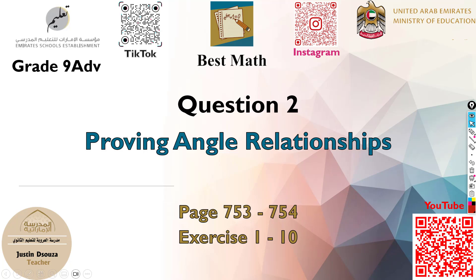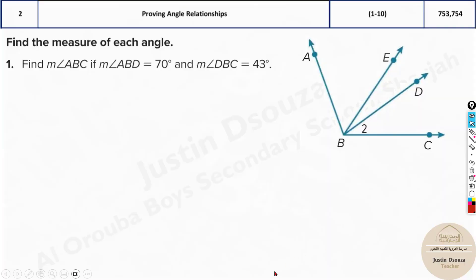The second question is about proving angle relationships. Before we continue, watch the part two videos first because in the writing part we have done similar problems with in-depth explanations. Now let's directly calculate, but you need to analyze what is given first. The measure of angle ABC is unknown, but you know that angle ABD is 70 degrees and angle DBC is 43 degrees.